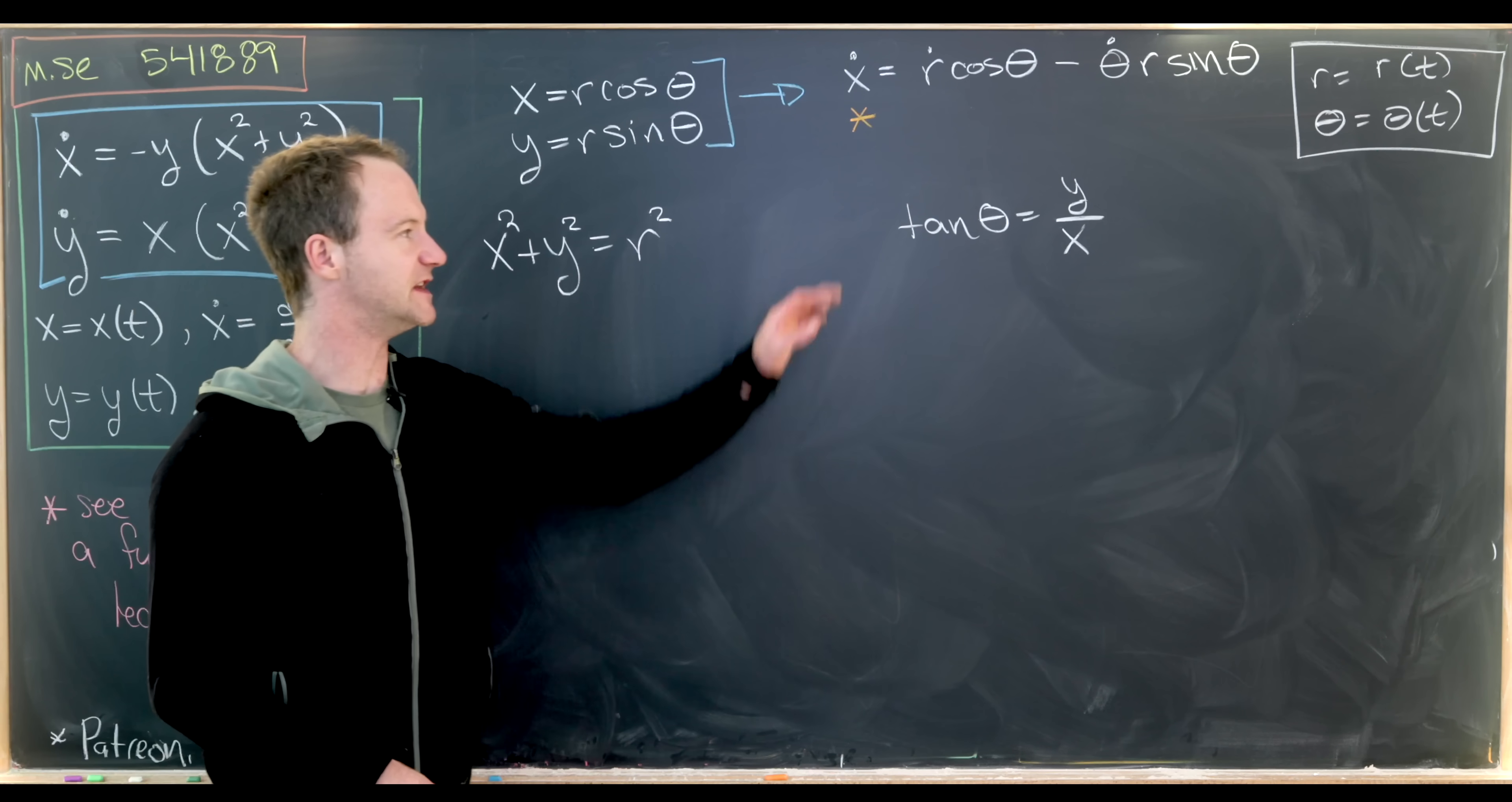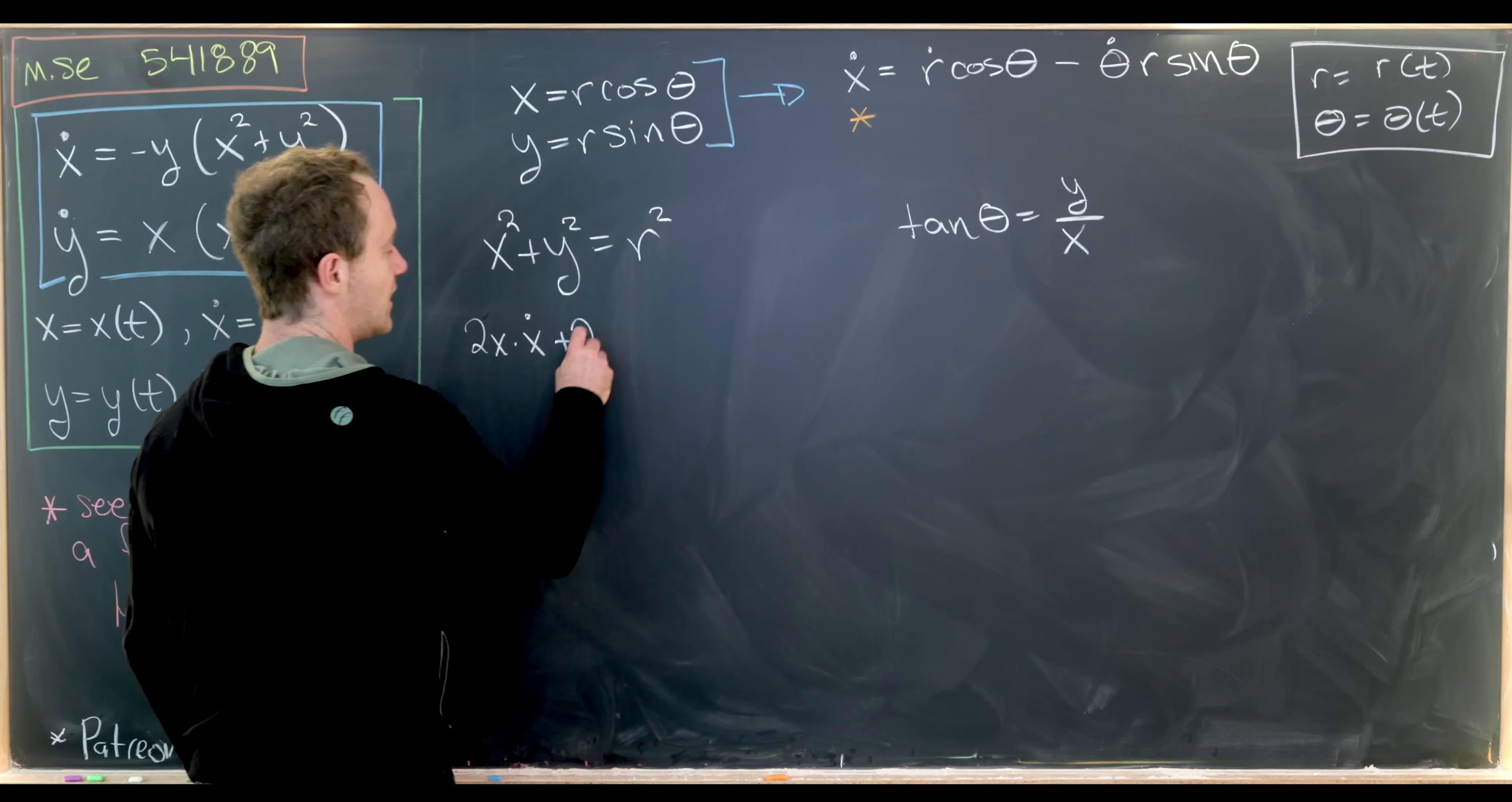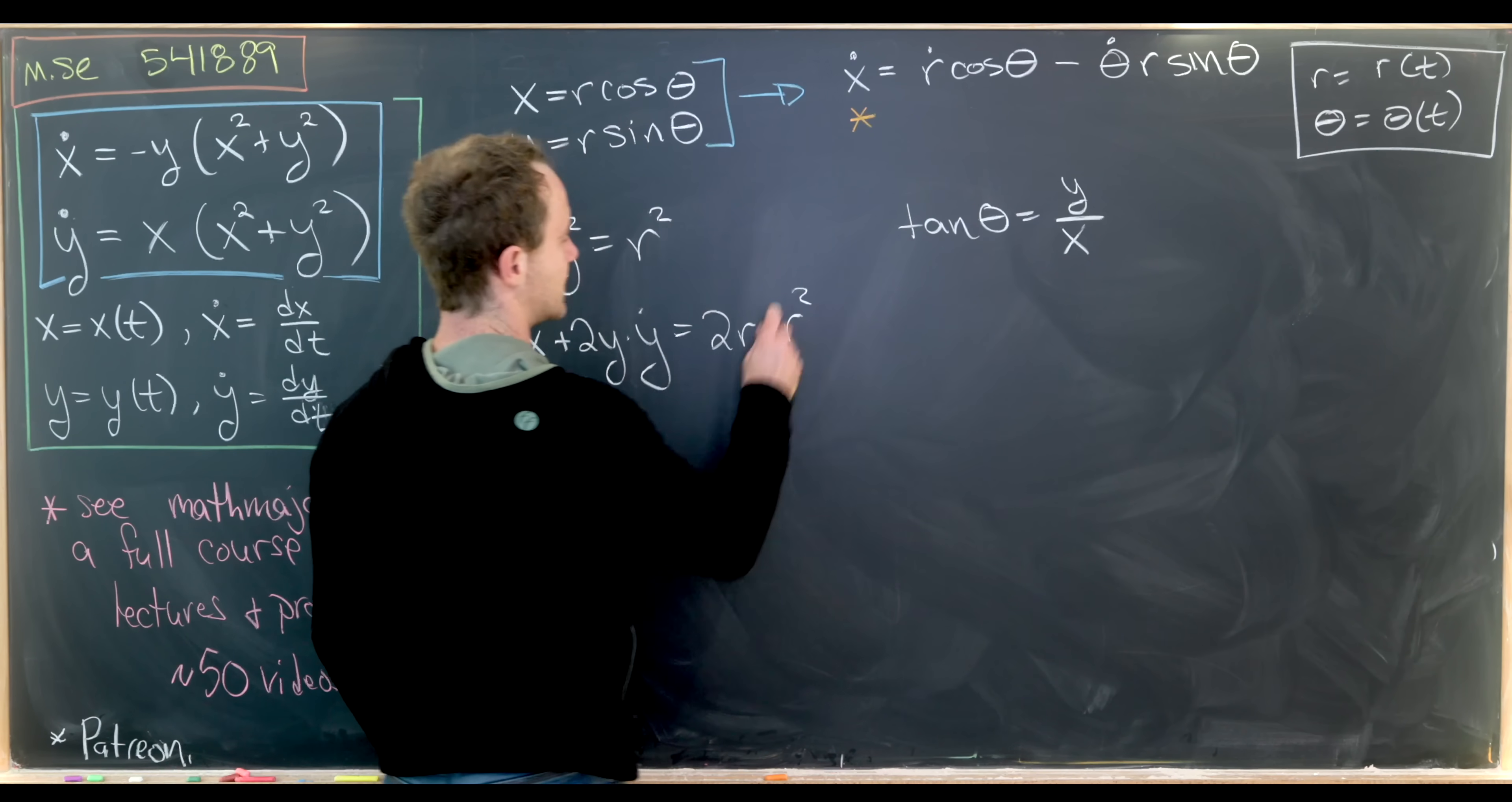And now we can take derivatives of these equations thinking about implicit derivative rules. Okay, so this is going to give us 2x times x dot plus 2y times y dot using the chain rule equals 2r times r dot.